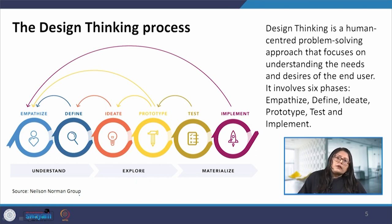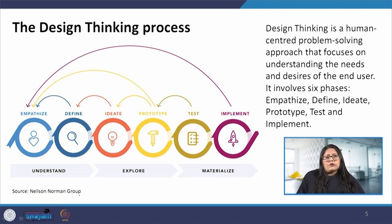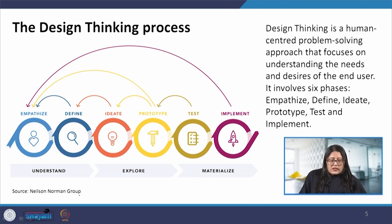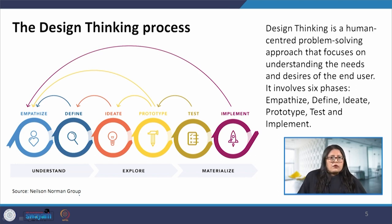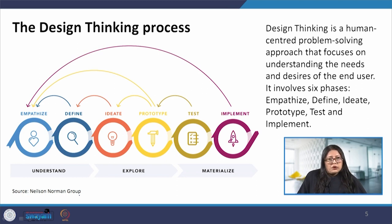Once we have selected a few good ideas, we go to the prototype stage. The prototype is a scaled-down version of what the final model will look like — a simple model that can be a paper model or an interactive digital representation, using fewer resources. Finally, in the test stage, we check for any flaws, problems, or gaps that have been left unaddressed, and then we implement the solution.